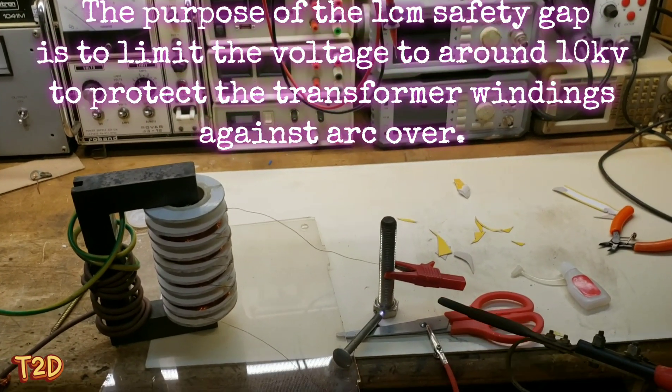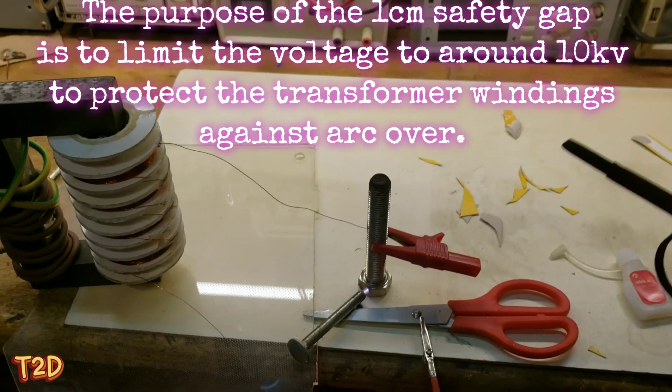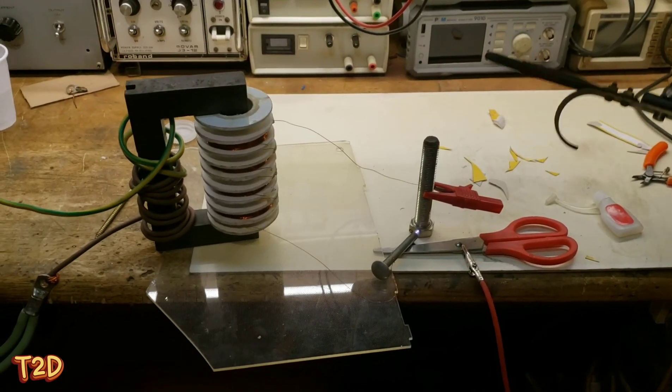So there we go. We jumped that little 1cm gap there, that safety gap. We jumped that at about 30 volts on the primary. So we'll just wind up a bit now and see what kind of output we've got.